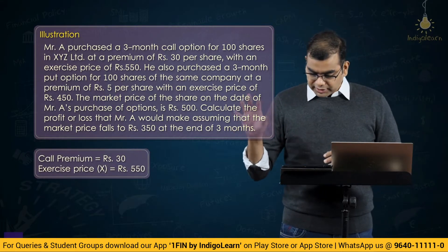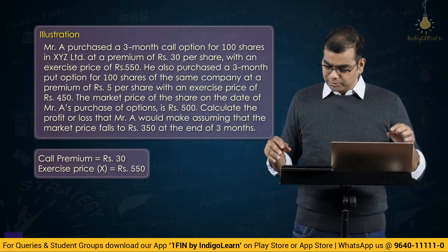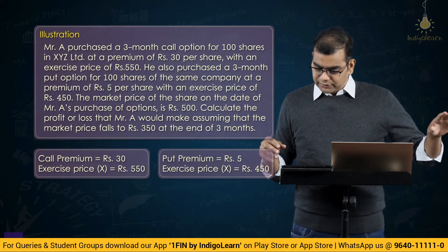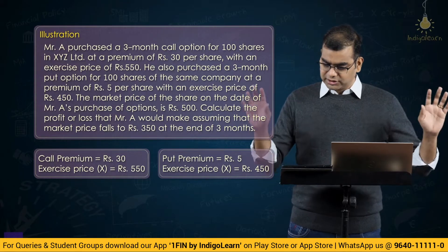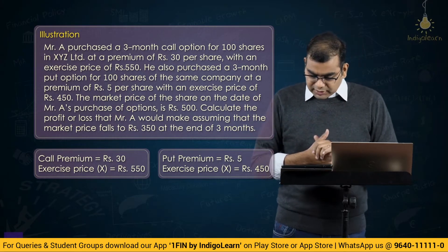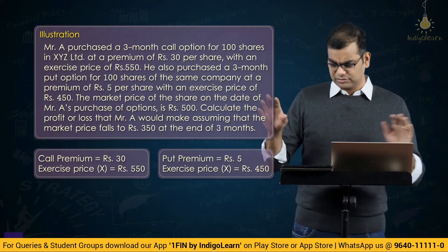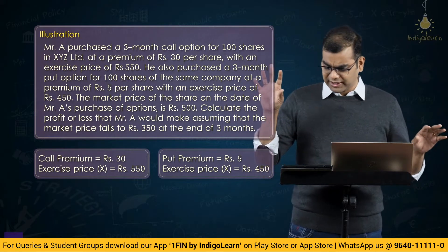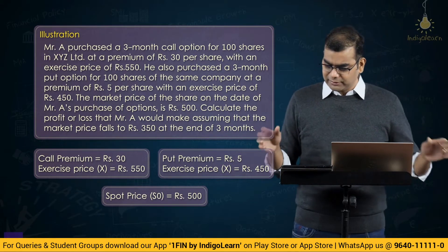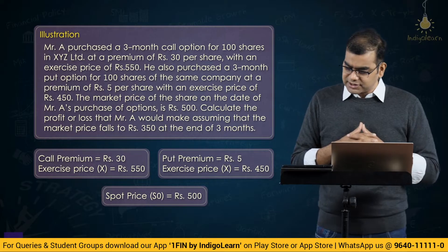So, call: Rs. 30 premium, exercise price 550. Put: Rs. 5 premium, exercise price 450. Both for 100 shares each, both 3-month duration. The market price of the share on the date of Mr. A's purchase of options is Rs. 500. The strike price for call is 550 and for put is 450, but the market price on the date of purchase of both options is 500.